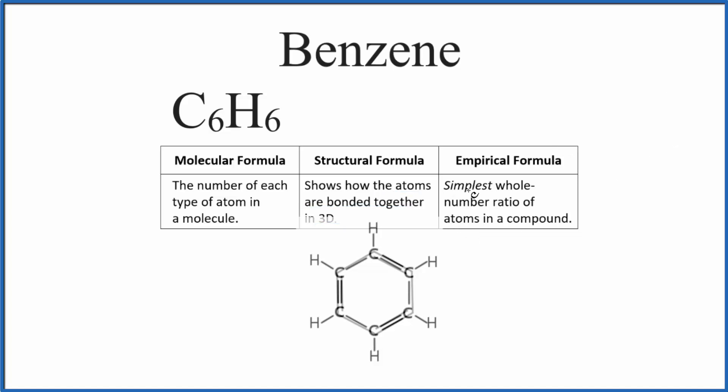The empirical formula, that's the simplest whole number ratio of the atoms. So we're really talking about what is the lowest ratio we can have. Since we have six carbons and six hydrogens, if we divided both of these by six, we'd end up with C1H1. And we don't write the one here by convention. So this is the empirical formula for benzene, just CH. And that's because we have the same number of carbons and hydrogens that gives us this simplest whole number ratio of CH as the empirical formula here for benzene.